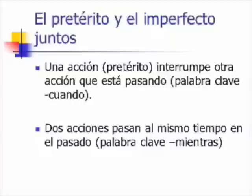Any kind of description of this person is going to be in the imperfect. El pretérito y el imperfecto juntos. Una acción en el pretérito interrumpe otra acción que está pasando. La palabra clave es cuando. Sometimes we have two actions taking place in the past in the same sentence. When that is the case, you sometimes have an action that is going on — that action is in the imperfect — and then another action interrupts it, which is in the pretérito.